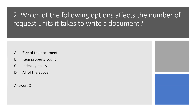Question 2. Which of the following options affects the number of RUs it takes to write a document? Option A: the size of the document. Option B: item property count. Option C: the indexing policy. Option D: all of the above.